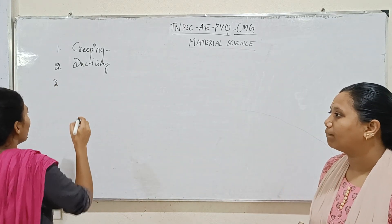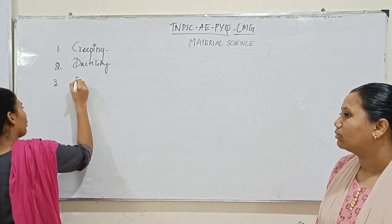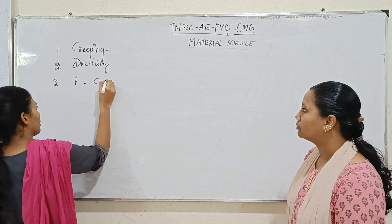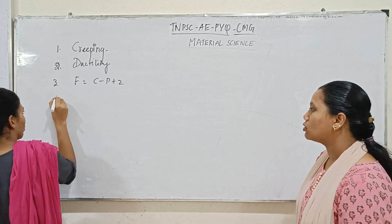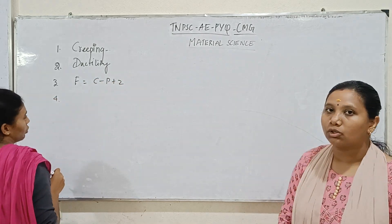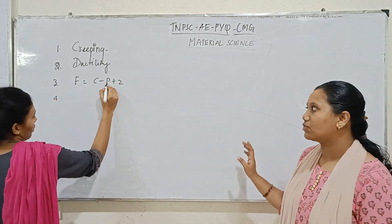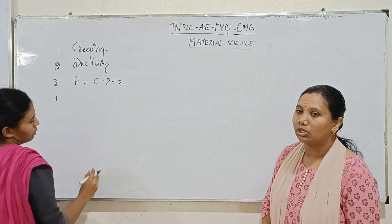Gibbs phase rule: F equals C minus P plus 2. The Gibbs phase rule gives the degree of freedom, where the number of components minus phases plus 2.